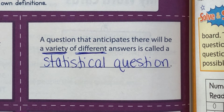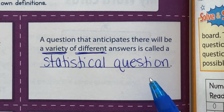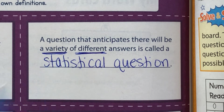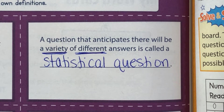We're going to start with finding averages and analyzing lists of data, beginning with figuring out what a statistical question is. The definition of a statistical question is: a question that anticipates there will be a variety of different answers. I underline 'variety' and 'different' because those are very important keywords to the definition.